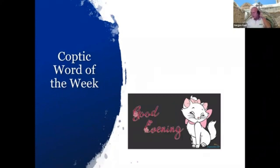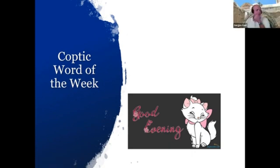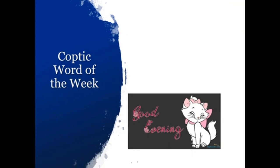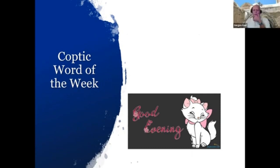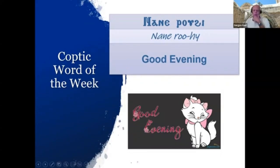Who remembers the word we learned last week? It was 'good morning.' How do you say good morning in Coptic? It starts with an N — 'Nane at-owi.' Very good! So today we'll learn good evening: it's also 'Nane,' and then evening is 'Rohi' — R-O, here Epsilon after an O is another O, then Hori and Yota — 'Rohi.' So 'Nane Rohi' means 'good evening.' Good morning is 'Nane at-owi,' good evening is 'Nane Rohi.'